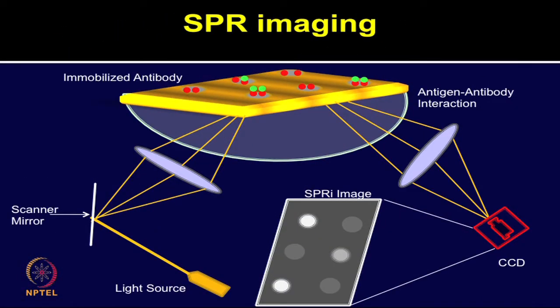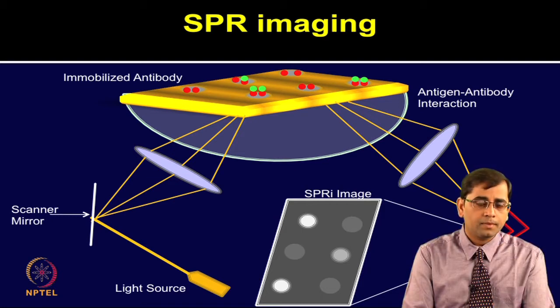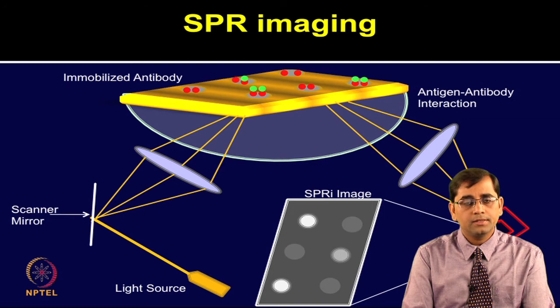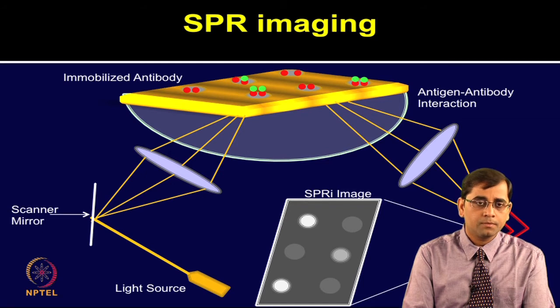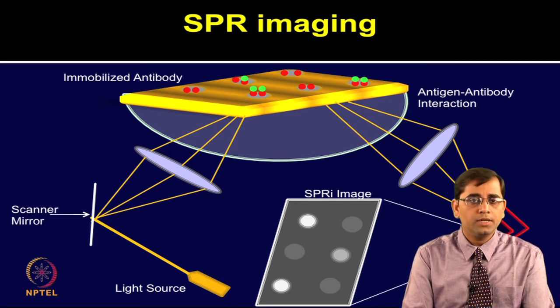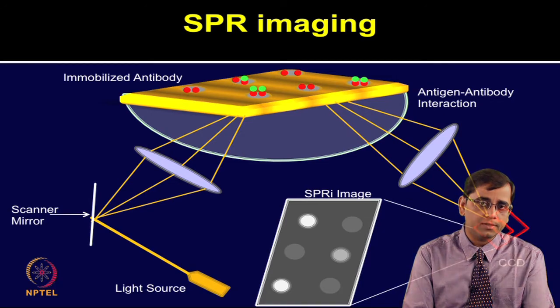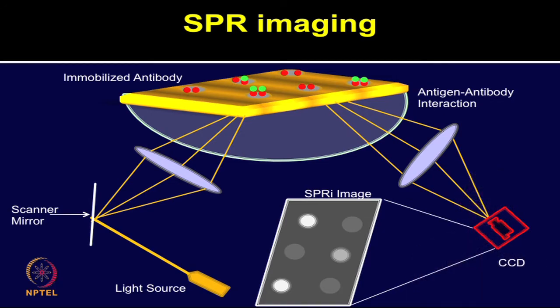In this slide, a setup of SPR imaging is shown. The configuration illustrates that light from a collimated polychromatic source passes through a polarizer and impinges on a prism or gold interface at a specific angle of incidence. As we can see, there is a gold surface, the prism, and the light source. The reflected light passes through a narrow band interference filter and is detected by the CCD camera.